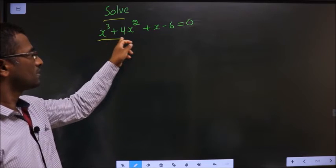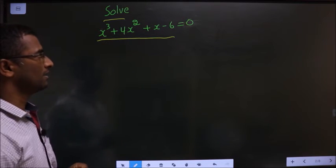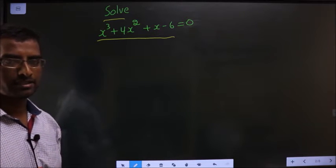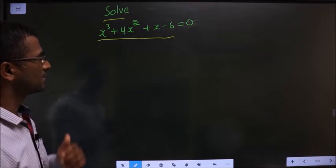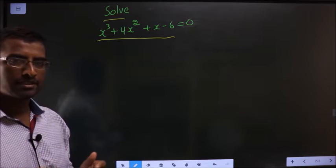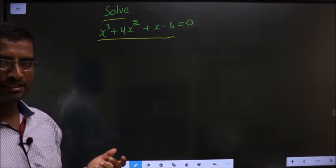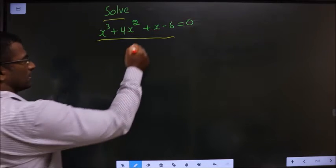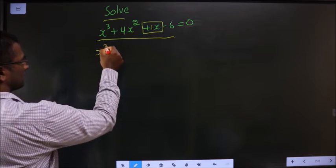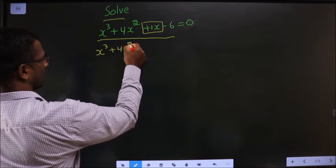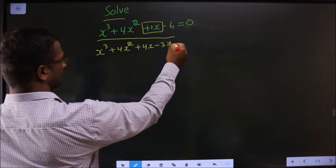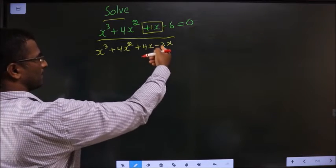Solve x cube plus 4x square plus x minus 6 equal to 0. Whenever you are told to solve, we need to find the values of x. Remember, even in quadratic equations we used to change the x term. Here also I will change the x term only. It is plus 1x, so instead of plus 1x I will be writing plus 4x minus 3x. Plus 4 minus 3 is plus 1.